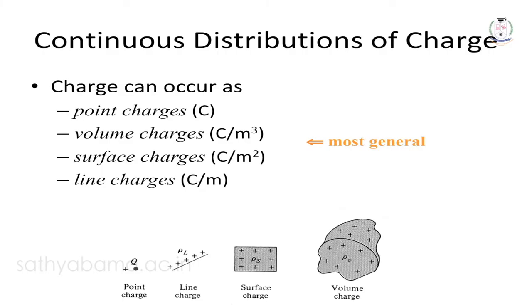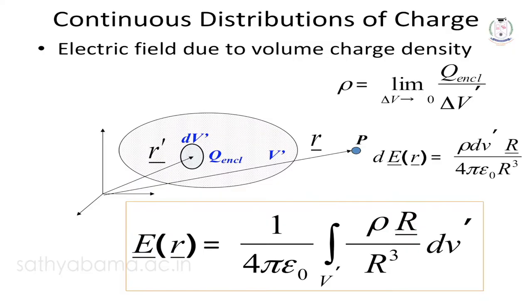If the charge is spread over a surface area, a line, or a volume, these are considered distributed charges. To find electric field intensity for distributed charges, there are three types of charge density: line charge density (represented by lambda λ), surface charge density (represented by sigma σ), and volume charge density (represented by rho ρ).